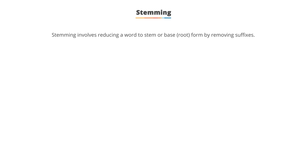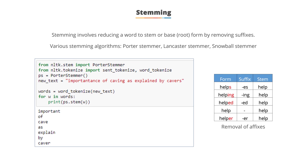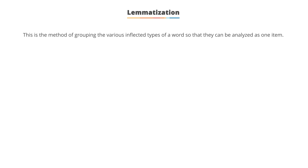Stemming is used to reduce a word to its stem or base word by removing suffixes. For example, 'helps', 'helping', 'helped', and 'helper' are reduced to the root word 'help'. The stemming process or algorithm is called a stemmer. Various stemming algorithms exist, such as Porter Stemmer, Lancaster Stemmer, and Snowball Stemmer. Use any stemmer defined under 'nltk.stem' to perform stemming.